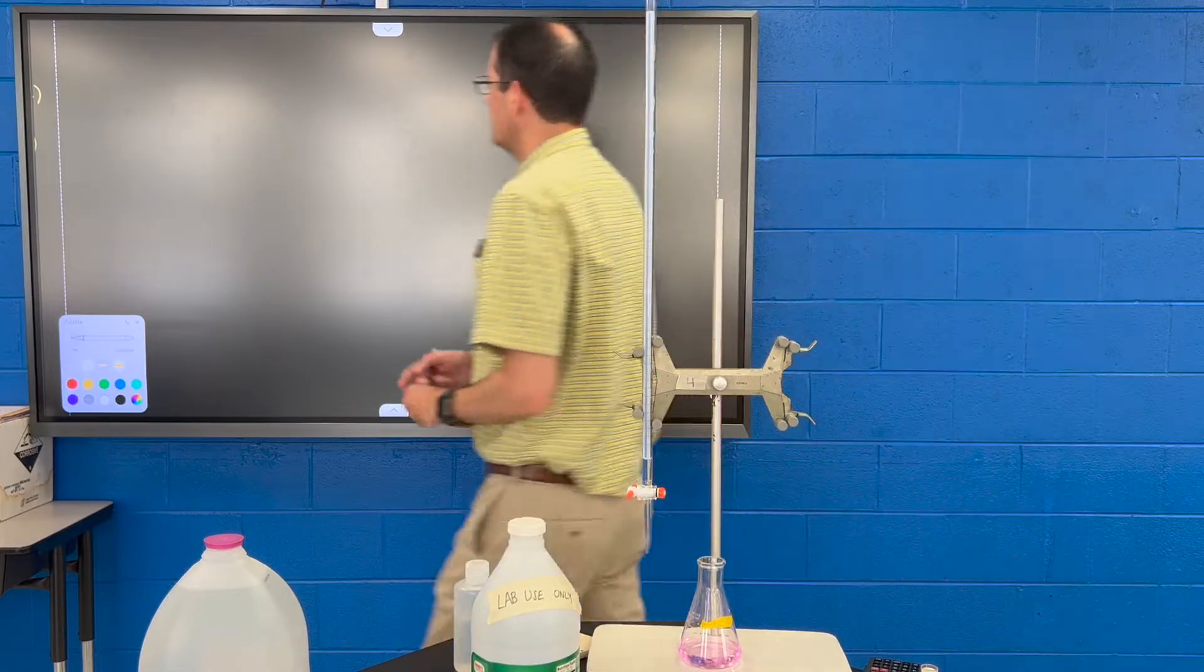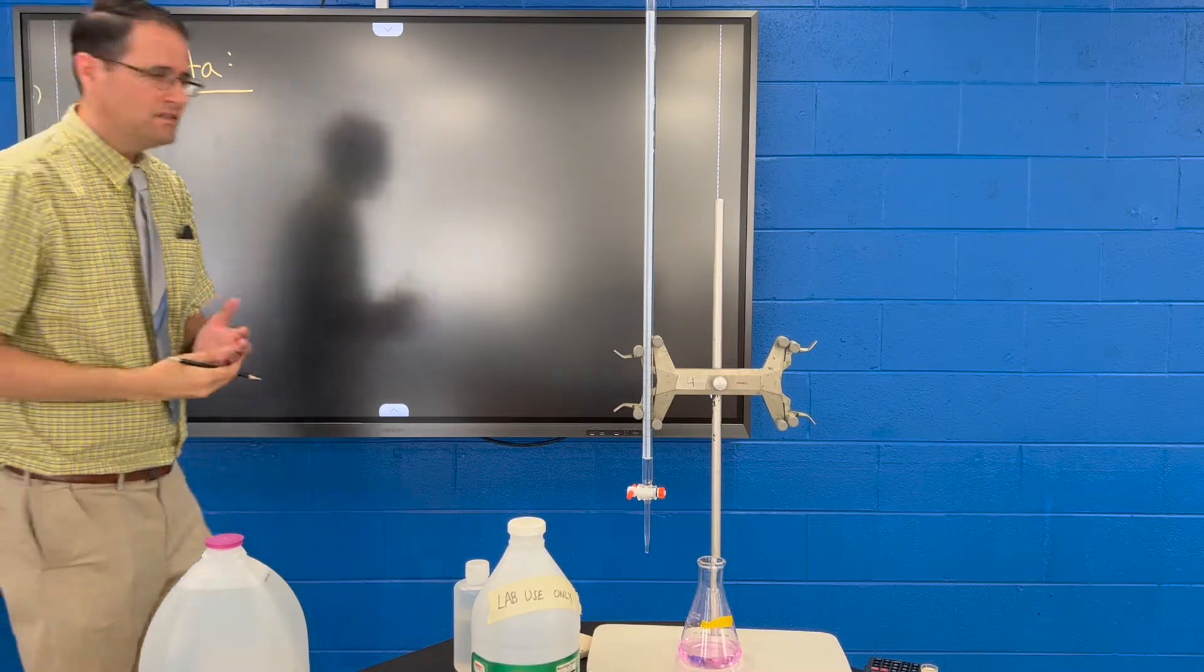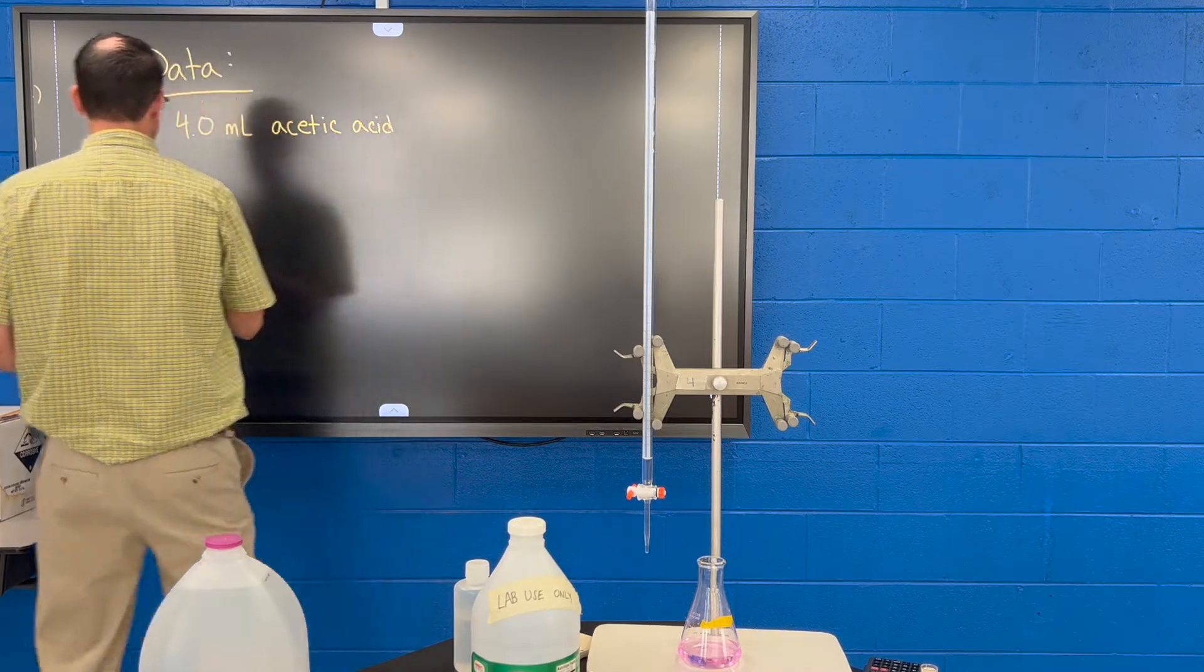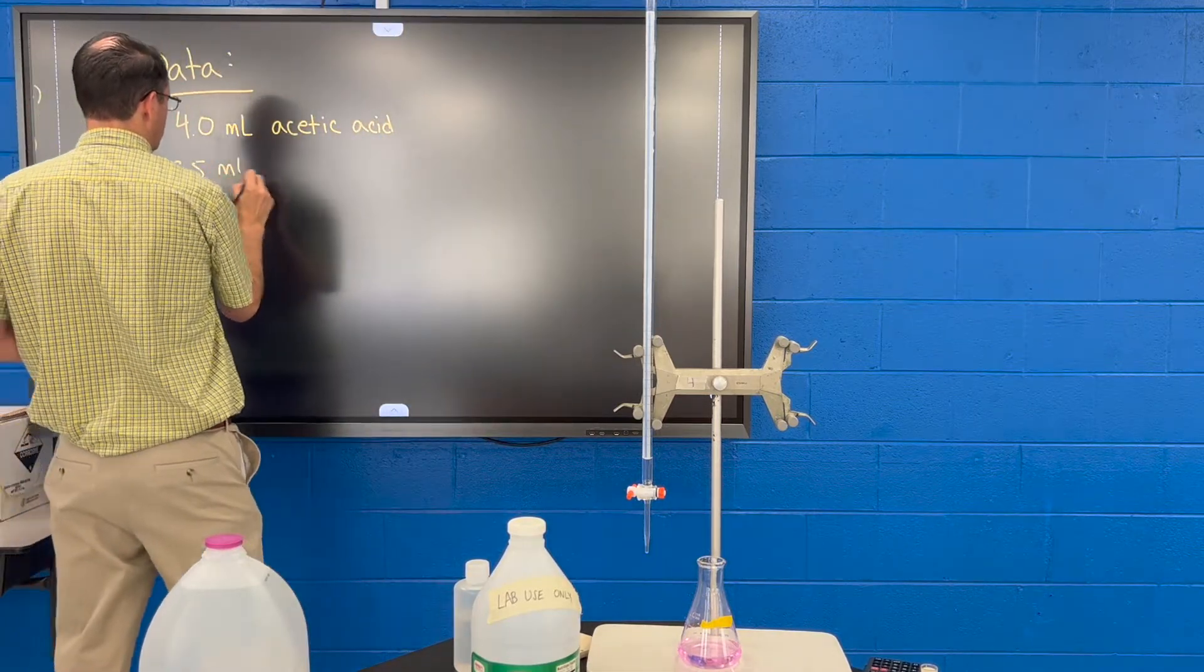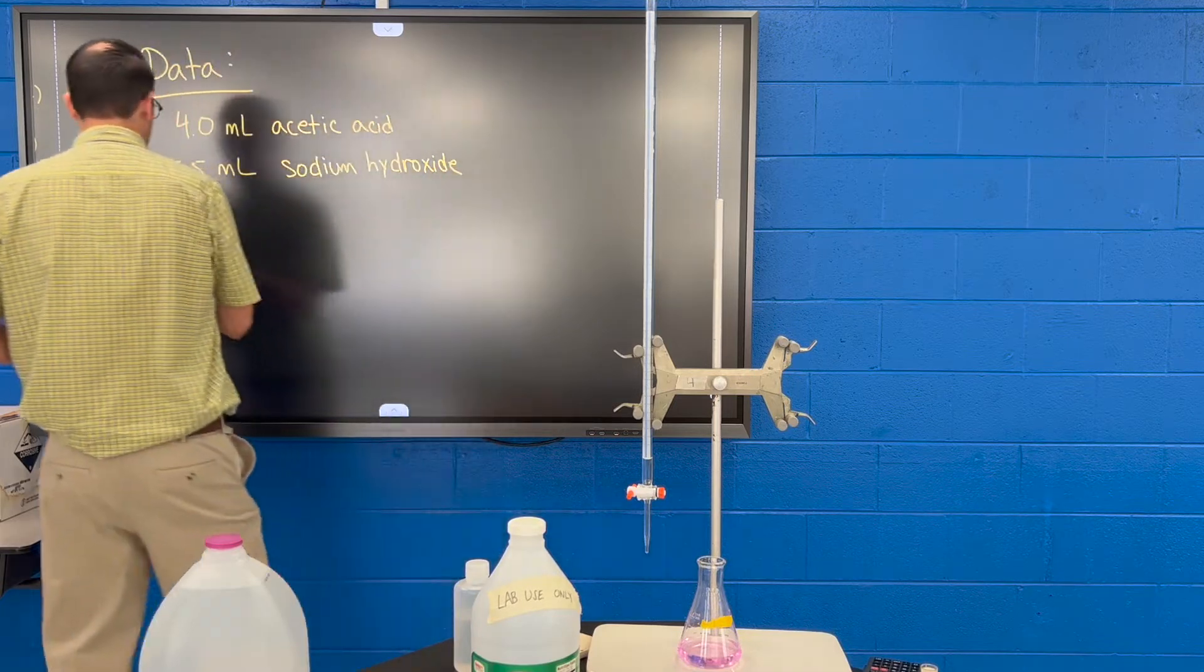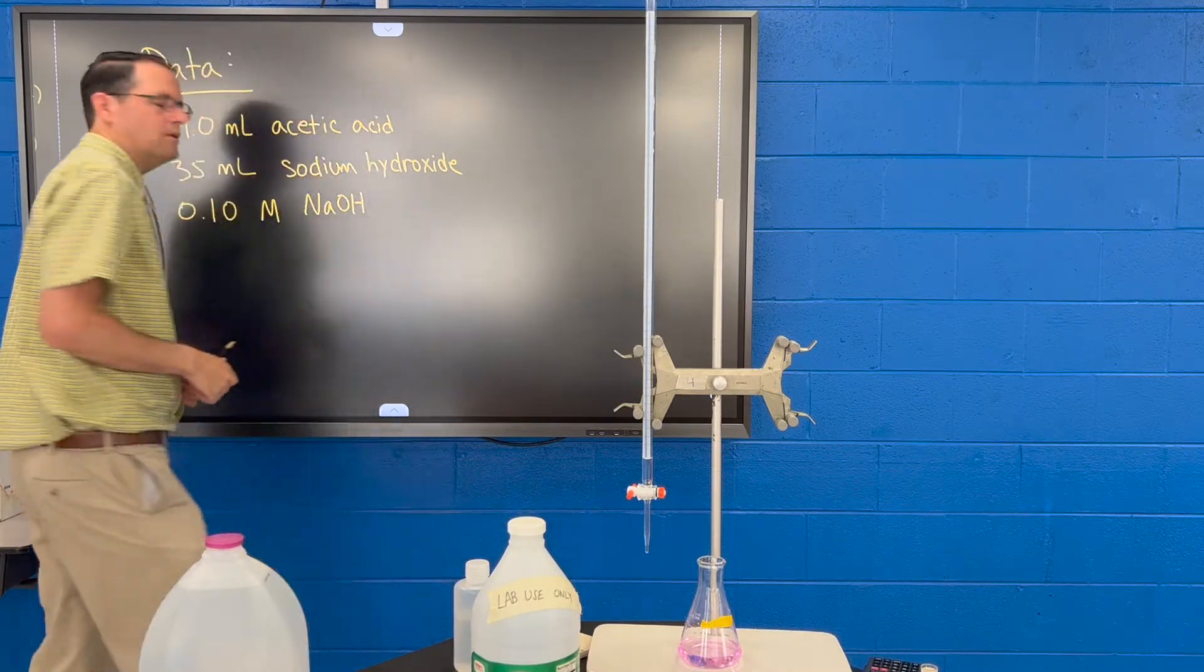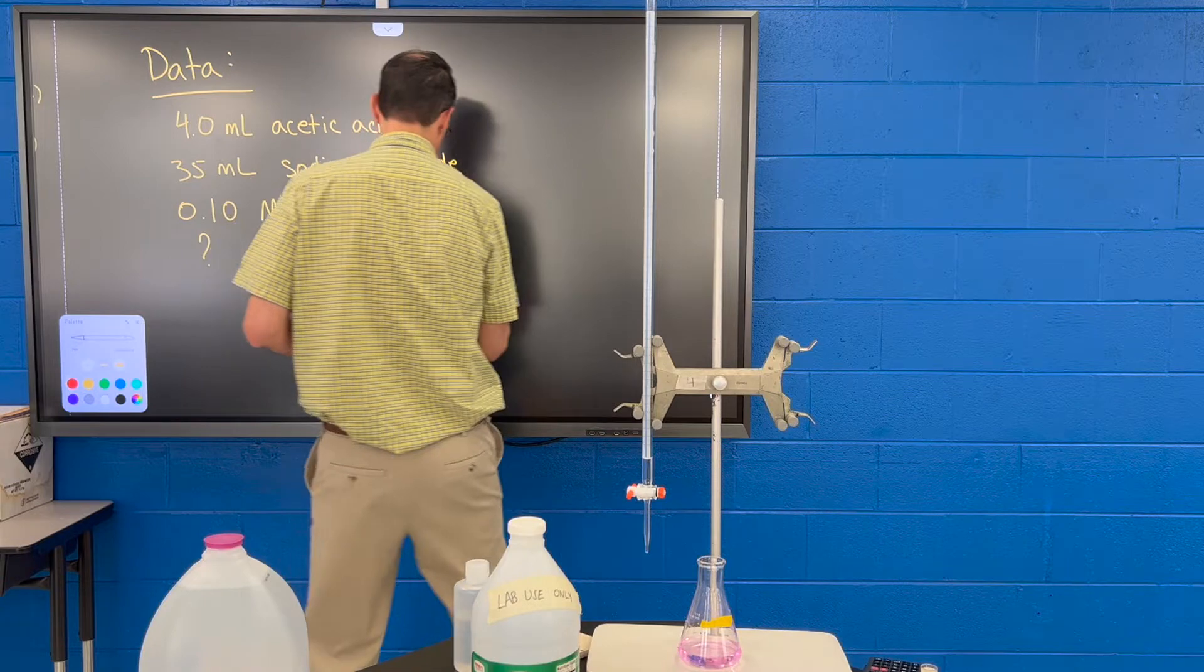So here's our data. This is completely fictitious, alright, but we're going to pretend like we used four milliliters of acetic acid. We're going to pretend like we used 35 milliliters of the sodium hydroxide, and the sodium hydroxide is 0.10 molar in concentration. And we want to know what is the molarity of acetic acid? So write these numbers down, remember them.